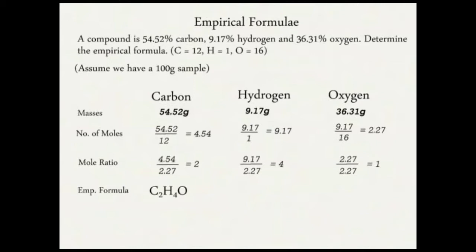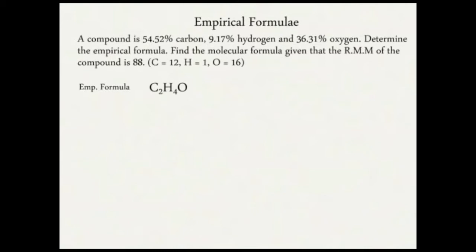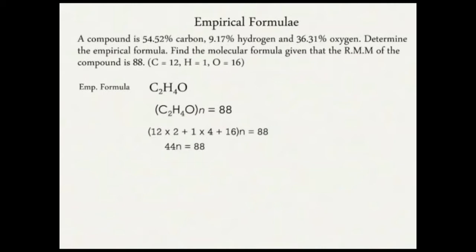To find the molecular formula, we need the relative molecular mass, which is given as 88. We set up the equation: (C₂H₄O) × n = 88. Using atomic masses — carbon is 12, hydrogen is 1, oxygen is 16 — we get (12×2 + 1×4 + 16) × n = 88, which gives 44n = 88, so n = 2. Therefore the molecular formula is C₄H₈O₂.